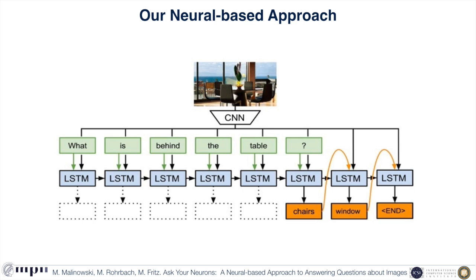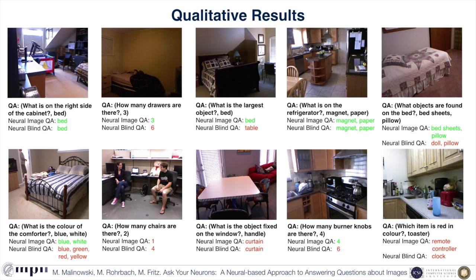In contrast, our new approach facilitates end-to-end joint learning. We combine convolutional and recurrent neural networks to generate multi-word answers, conditioned on the image and the question. Our method can answer correctly on a wide range of questions and also improves over a language-only baseline for which we have collected new annotations.